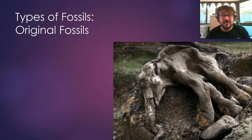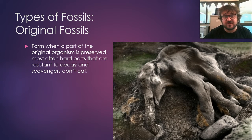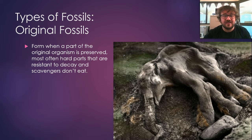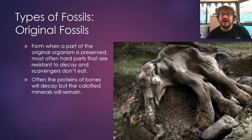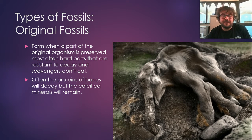We're now going to look at four types of fossils. The first and simplest is original fossils — basically when part of an organism is preserved, kind of as it was. It's usually the hard parts which are resistant to decay and that scavengers don't eat. If we're looking at bones, the proteins will decay away in a bone, but the calcified parts will stay there. This means it's very brittle and very light compared to other bones.